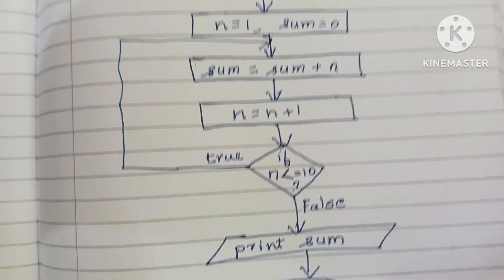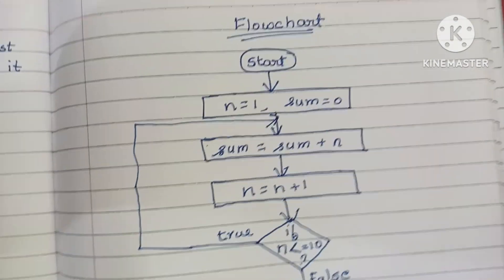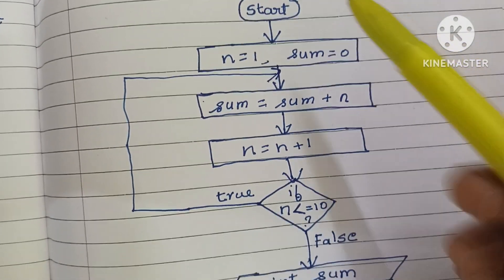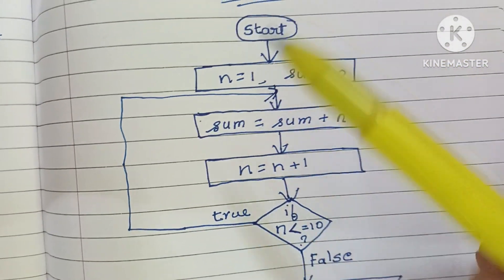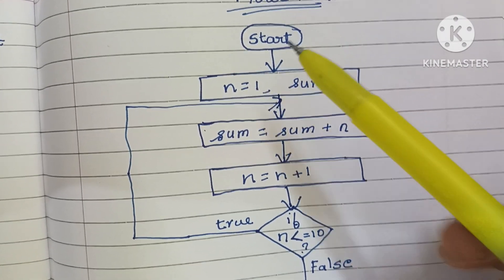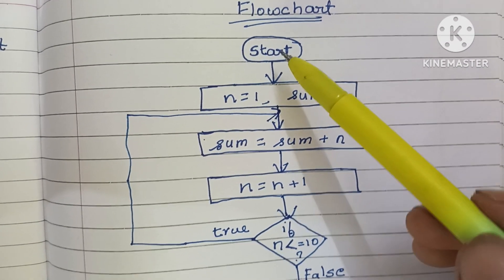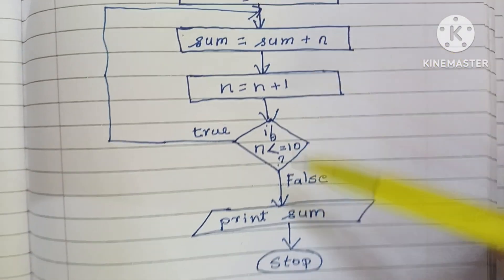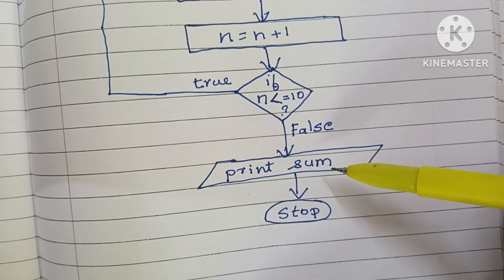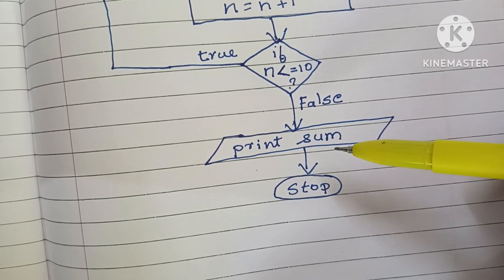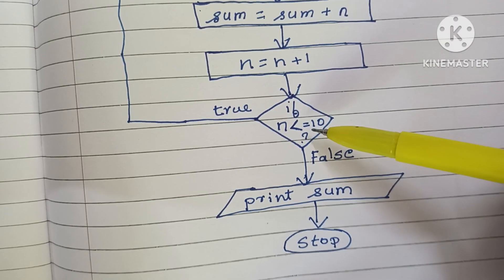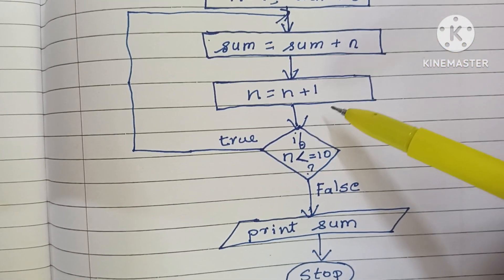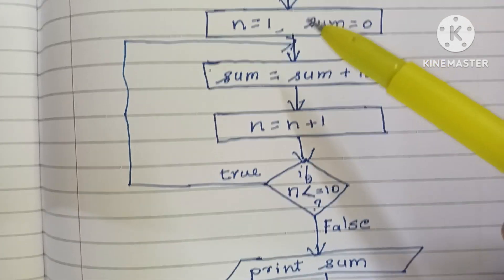This is the flowchart to find the sum of the first 10 natural numbers. Start and stop statements are written within an oval shape. Output values are written within a parallelogram shape. Comparison is done within a diamond shape. Declaration and calculation are done within a rectangular shape.